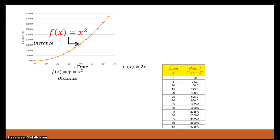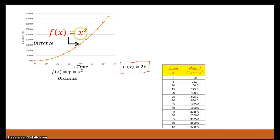We did the derivative on that last one with the power rule. With the power rule, to take the derivative of x squared, you take the current exponent, put it down as a coefficient — which gives you the 2 — and subtract 1 from that exponent. So you end up with 2x as the derivative of x squared. This represents the distance, and 2x represents the velocity — a function that describes the velocity.